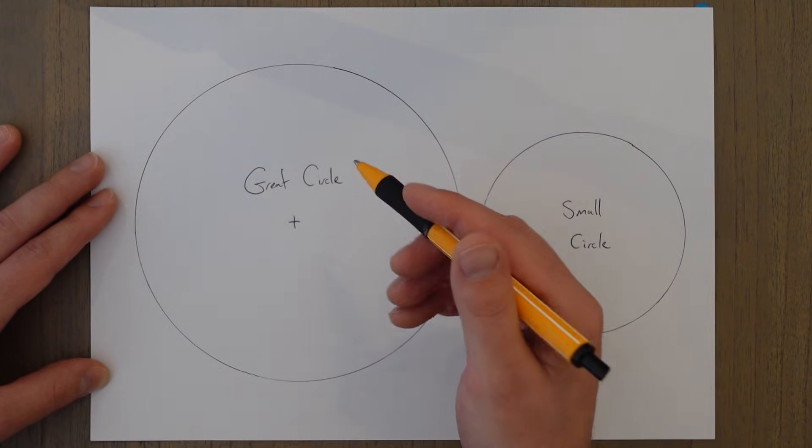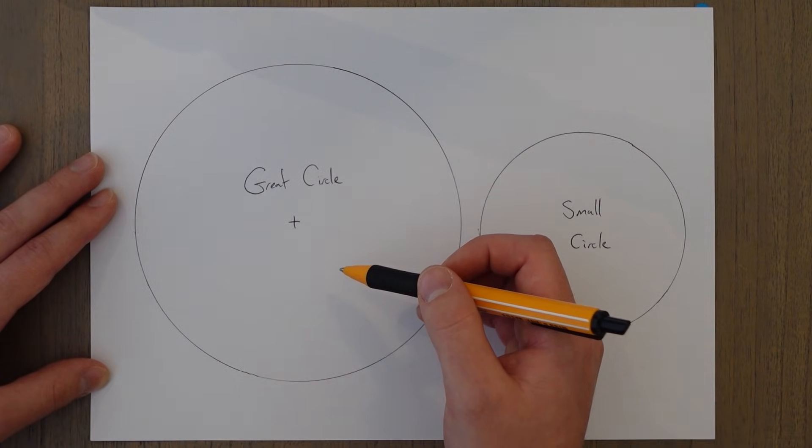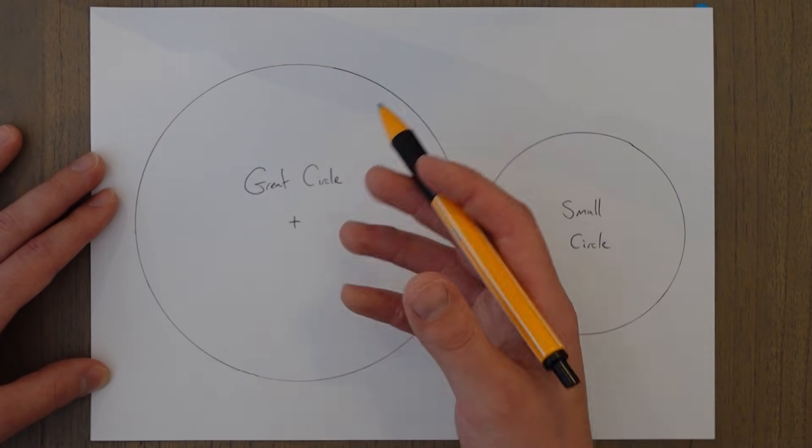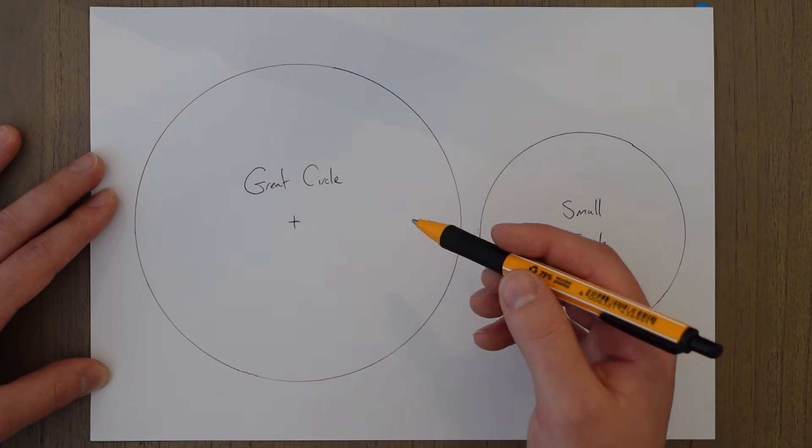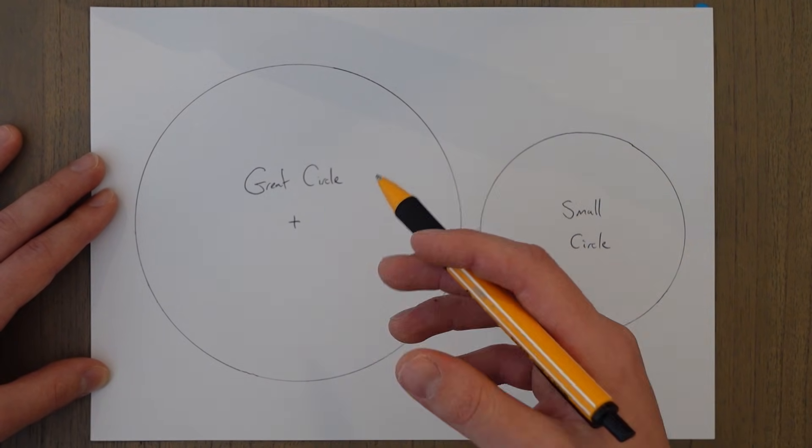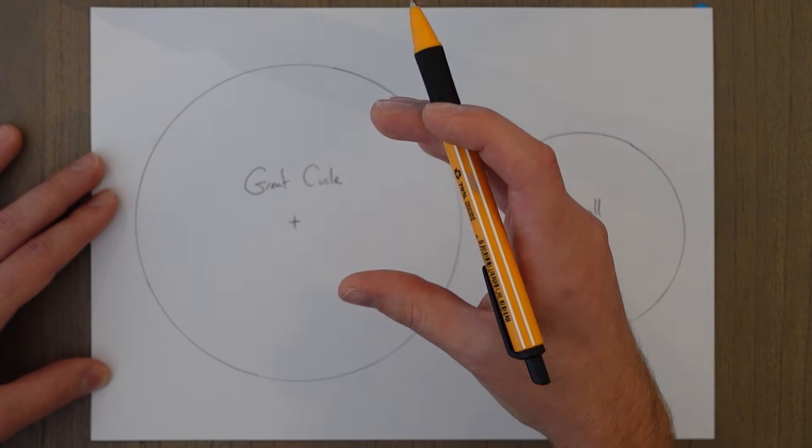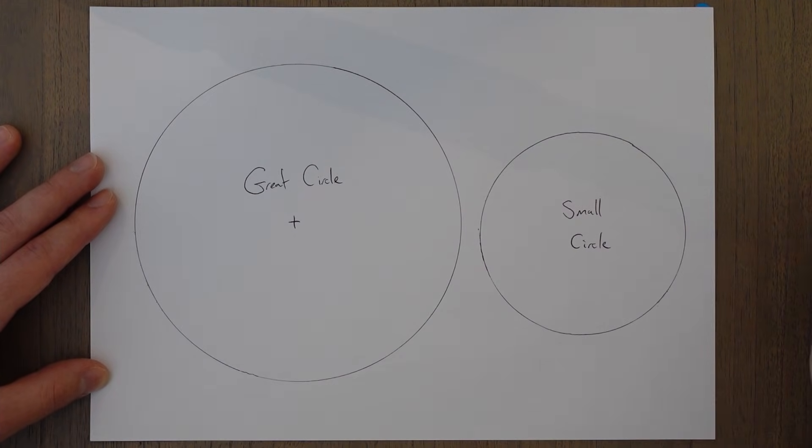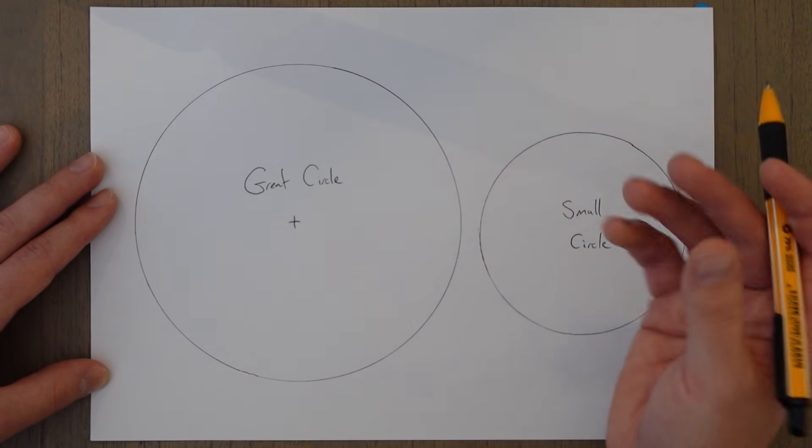This is only true on a perfect sphere though so the only places that this really applies on the Earth are lines that pass through the equator and both poles. The shortest distance in real life on Earth between two points is known as a geodesic and which will be slightly different from the great circle because of that squished nature of the Earth but essentially it's not too far off and you can essentially assume them to be the same thing.